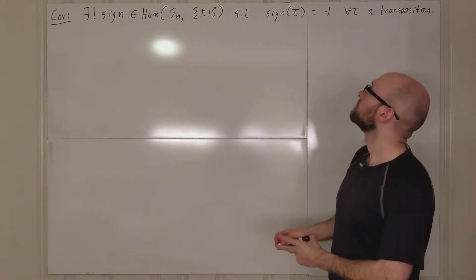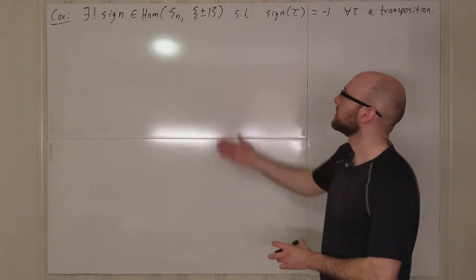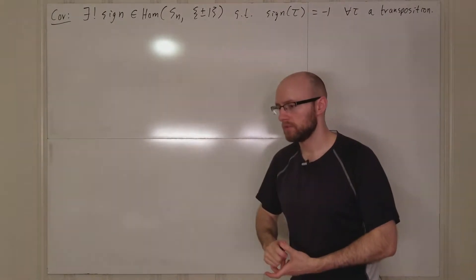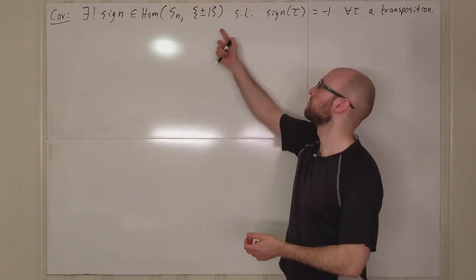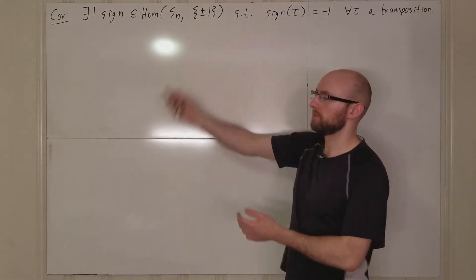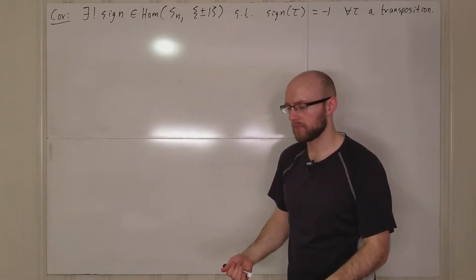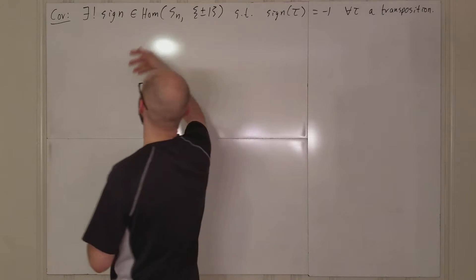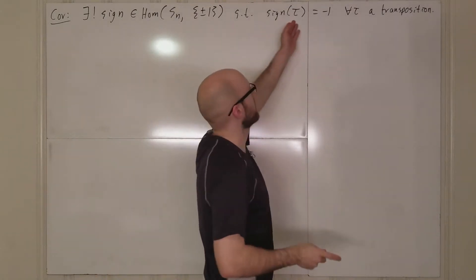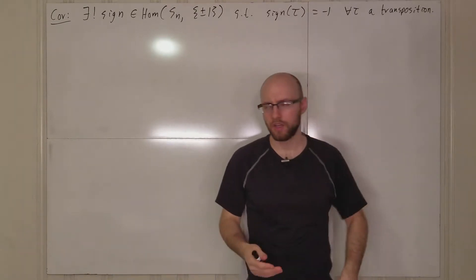And so here, the other thing is that it's mapping into plus or minus one as a group, so its image is going to be a subgroup. So its image is either going to have to be just one, or it's going to have to be plus minus one. If it's just one, then it's the trivial homomorphism, and so the sign of any transposition will be one, and so that's no good. That's not what we want.